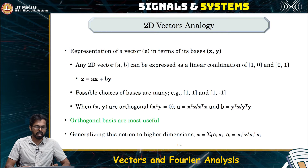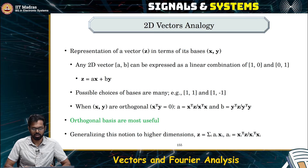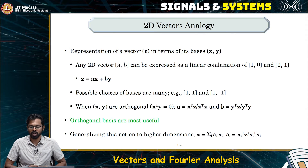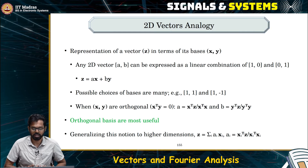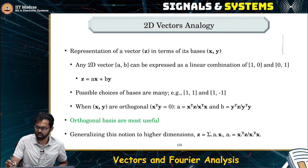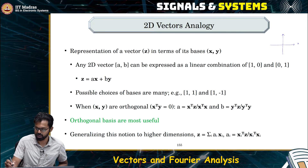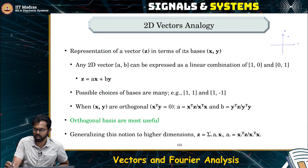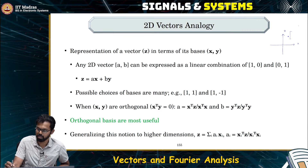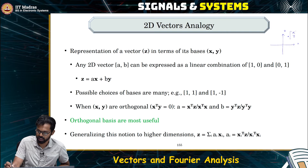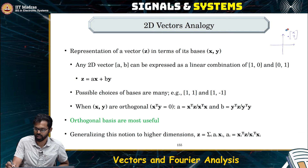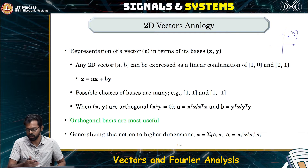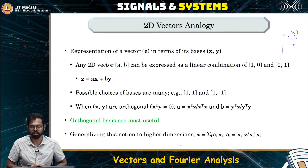Let us start with a very simple analogy before we do this for our signals. Let us consider a 2D vector space. What is a 2D vector space? It is simply our two-dimensional x and y. If you take this x-axis and y-axis, at any point here you can represent it using a vector which has two elements.